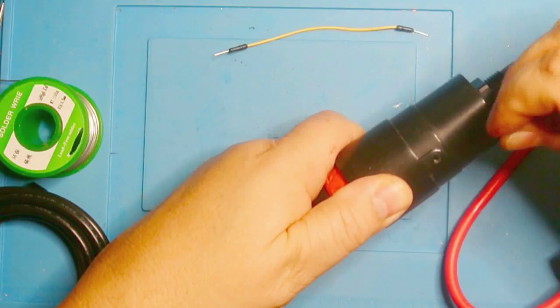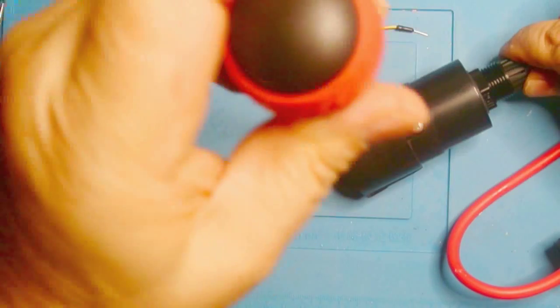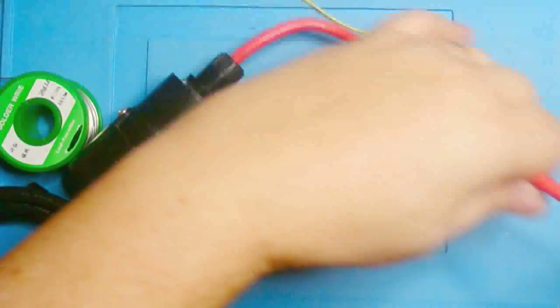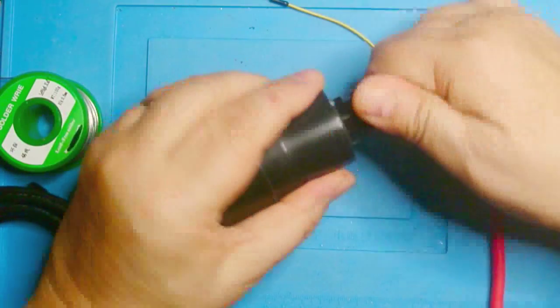Then we just want to put these screws in here that hold everything together. These are the original screws. And then finally, we just run this gland back up here and tighten it down.